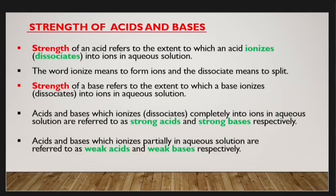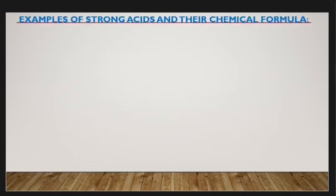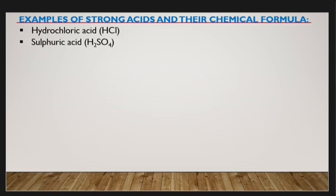Now let's look at examples of strong acids and their chemical formulas. Number one, we have hydrochloric acid whose formula is HCl. Number two, we have sulfuric acid whose formula is H₂SO₄. Number three, we have nitric acid whose formula is HNO₃. These are the common strong acids found in the laboratory.